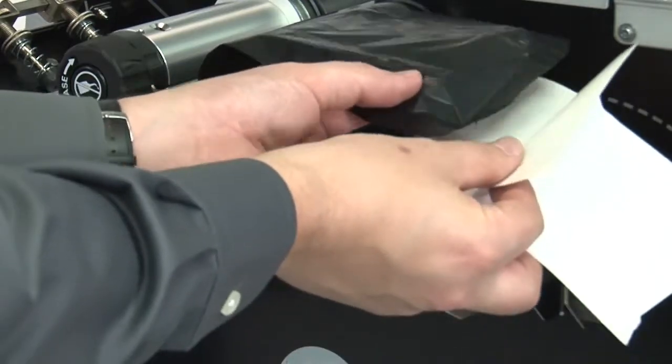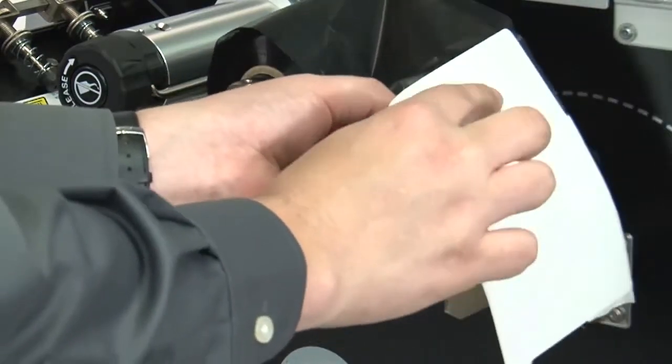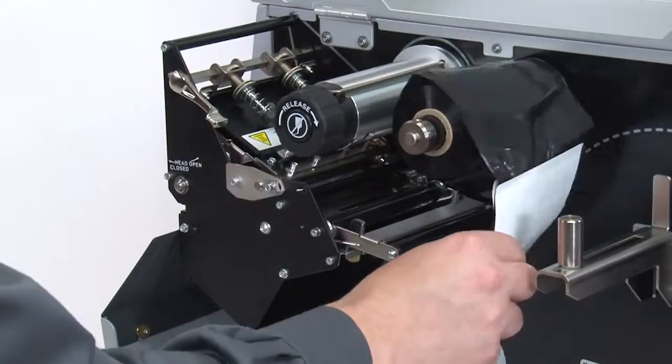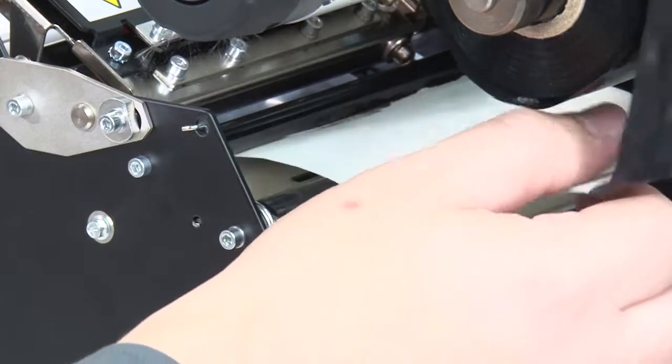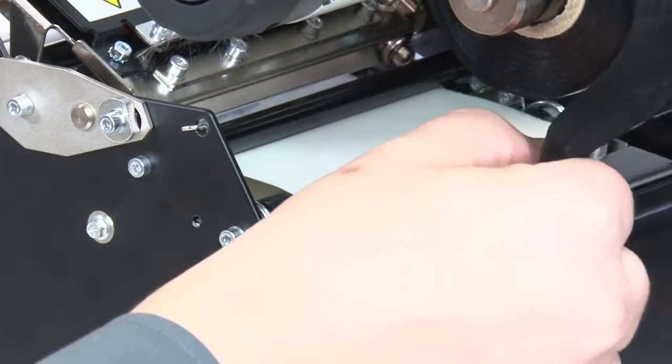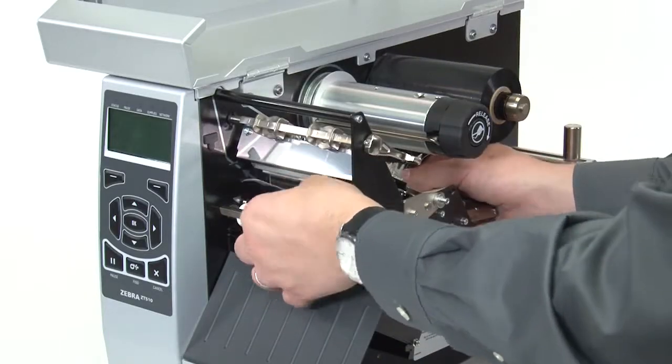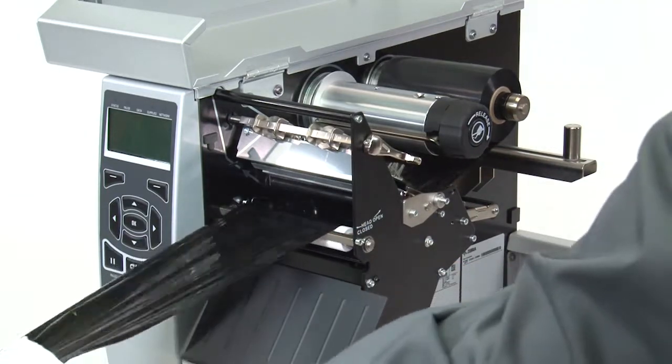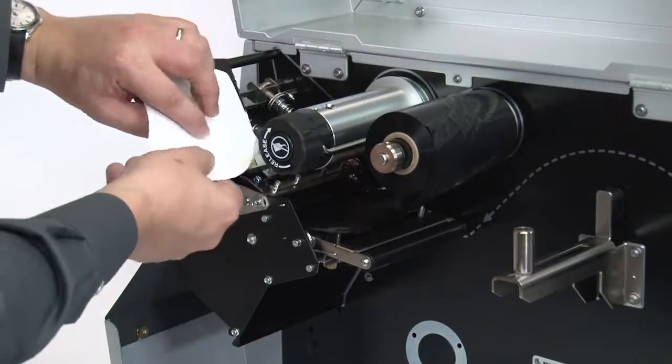Attach this label to the end of the ribbon to act as a leader. Open the printhead. Feed the ribbon leader under the ribbon roller and under the printhead. Bring the ribbon leader over the upper ribbon roller and towards the ribbon take-up spindle.